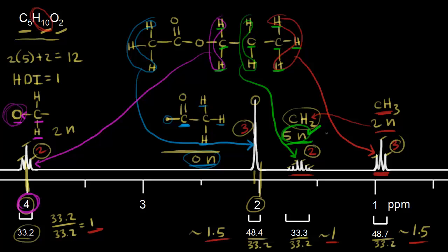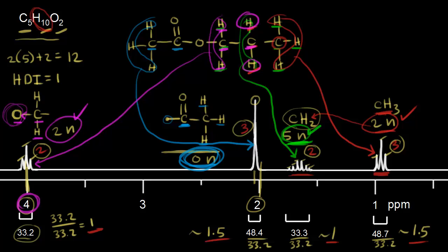In reality the magenta and red protons are in different environments, so this oversimplified n plus one rule isn't exactly correct, but it corresponds to what we see on the NMR spectrum. It helped us figure out the structure. The red protons have two neighbors — the adjacent CH2. The magenta protons have two neighbors from the next-door carbon. The blue protons have zero neighbors because the adjacent carbonyl carbon has no protons, giving us a singlet.